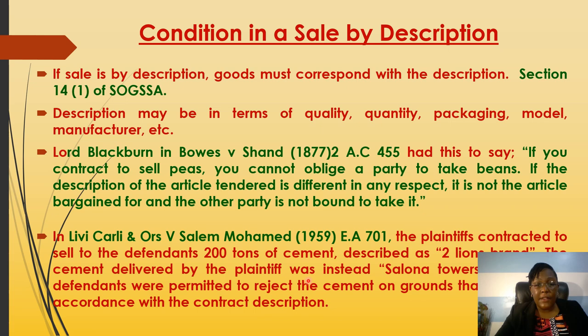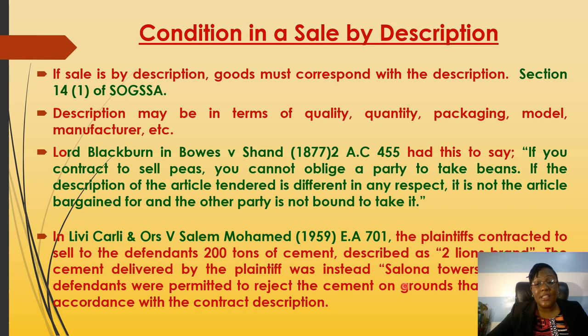In the case of Livi Khali and Others versus Salem Muhammad, the plaintiff contracted to sell to the defendant 200 tons of cement described as 'Two Lands brand.' The cement delivered by the plaintiff was 'Salona Tower cement' — a different brand entirely. The law said the defendants were entitled to reject the cement on the grounds that what was supplied was not in accordance with the contract description. If I fail to supply what was described, the other party is entitled to reject and repudiate the contract.